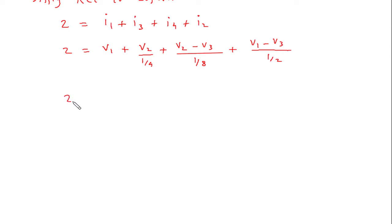Now this will be 2 is equal to V1 plus this will be 4V2 plus 8V2 minus 8V3 plus 2V1 minus 2V3.